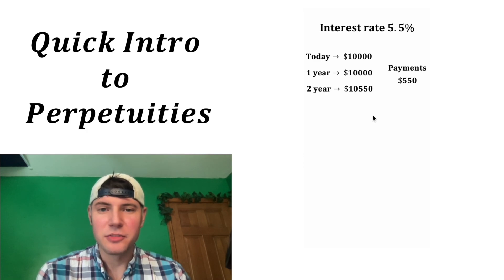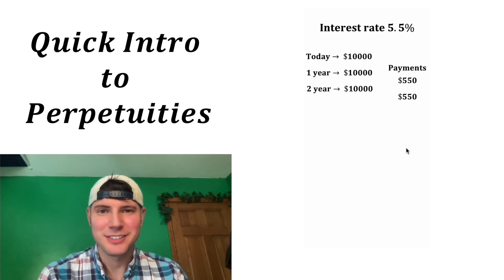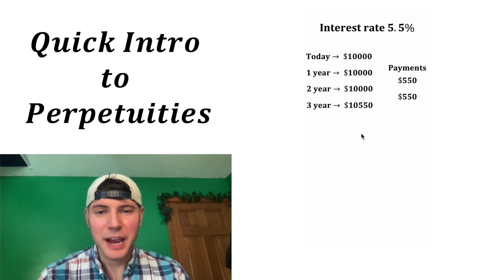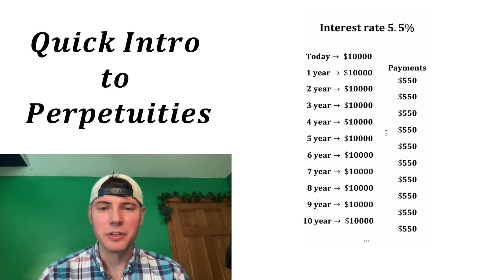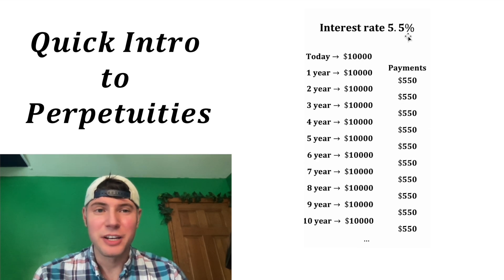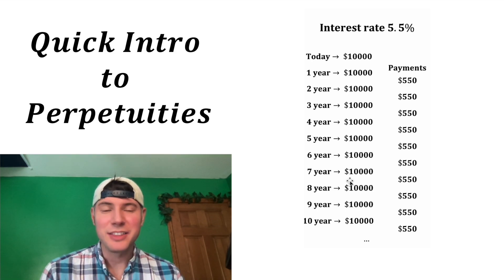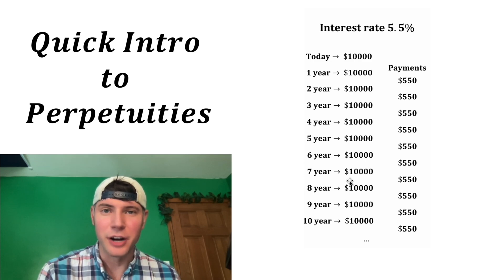Then again, after another year, this would be another $10,550, and I can pull that out and take another payment. And then another year passes and I do it again, and I'm gonna keep doing that forever. And 10 years later, I still have that original $10,000 and I've been taking out all these payments. As long as my interest rate can stay at 5.5%, this will last forever. And this is how $10,000 today is equal to payments of $550 every year forever.